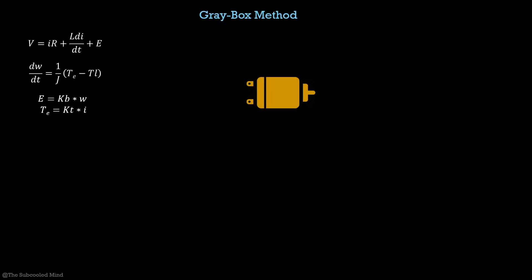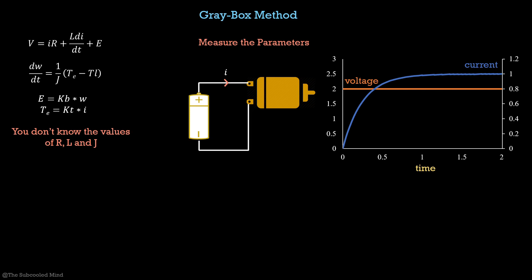We will start with the gray box method. You know something about the system, but not everything. In the DC motor case, you do not know the values of R, L and J. We will first see how to measure these values. I can give a small voltage to the DC motor and check the final steady state current value. The resistance of the motor is nothing but V by I and in this case, it is 2V by 1A which is equal to 2 Ohms. We have found the resistance.